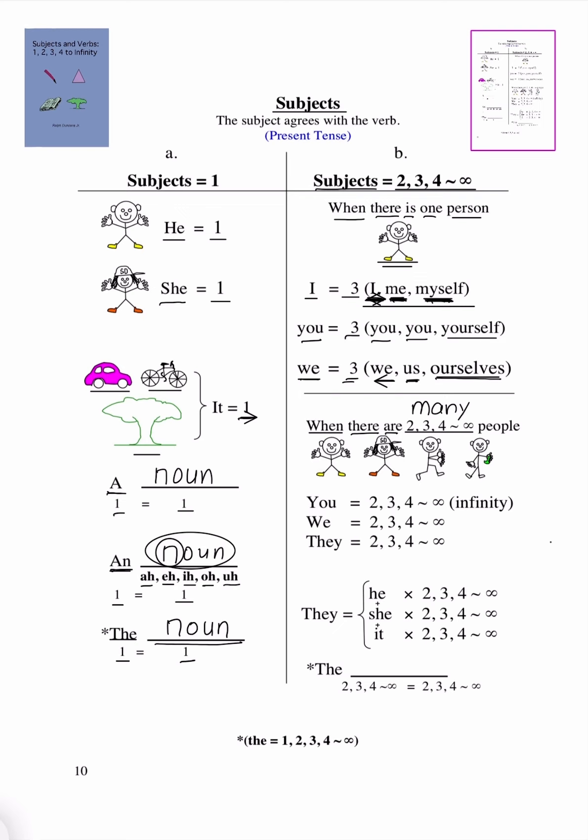Many. And then here are people. So, we all know that you is going to equal 2, 3, 4 to infinity. We is going to be 2, 3, 4 to infinity. And they will equal 2, 3, 4 to infinity.